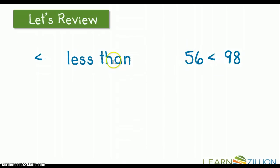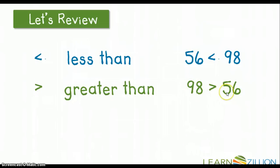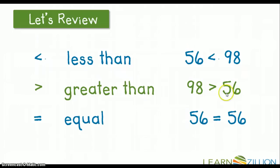So this is the less than symbol and this is the greater than symbol. My alligator mouth is pointing towards my larger number, which is 98. So I know that 98 is greater than 56. This is my equal to sign, and so we would read this number sentence as 56 is equal to 56.